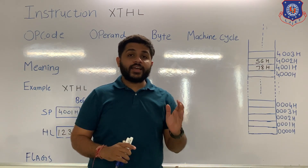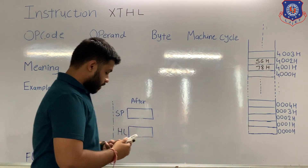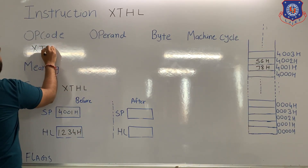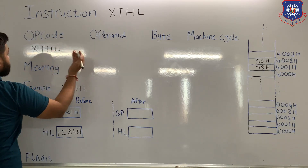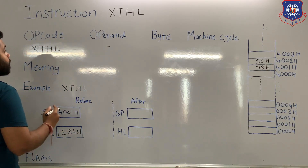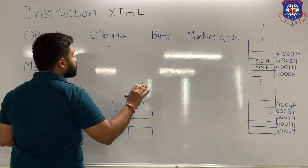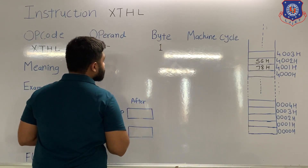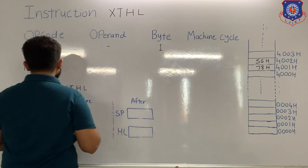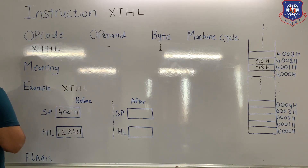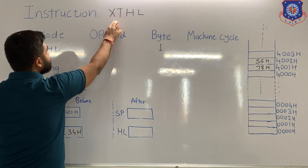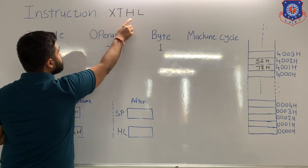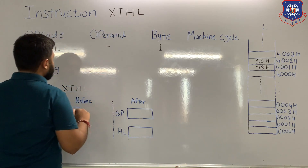Now we are going to see the instruction XTHL. For this instruction, no operand is present — you can see that in this instruction no data is present. It means this instruction is of only one byte. XTHL means: exchange the content of the HL pair with the stack.